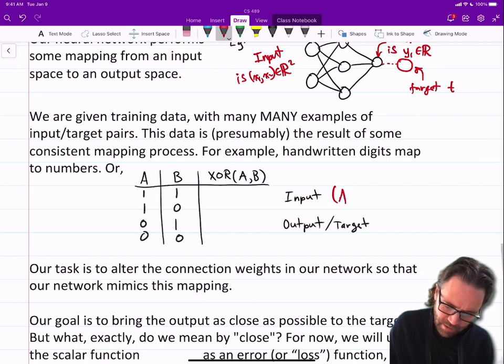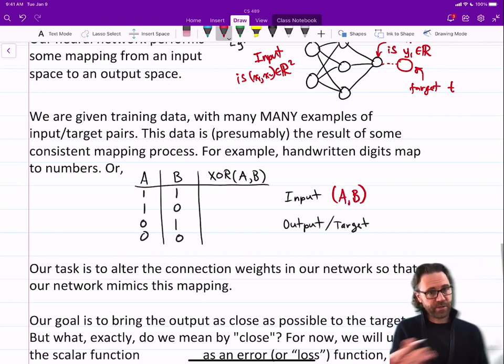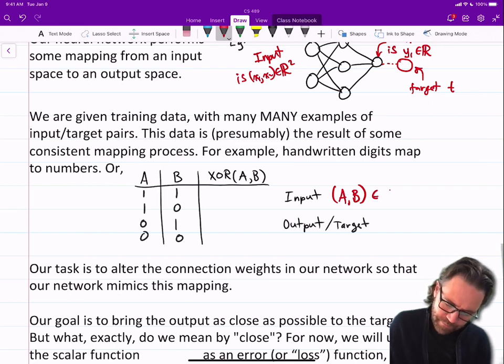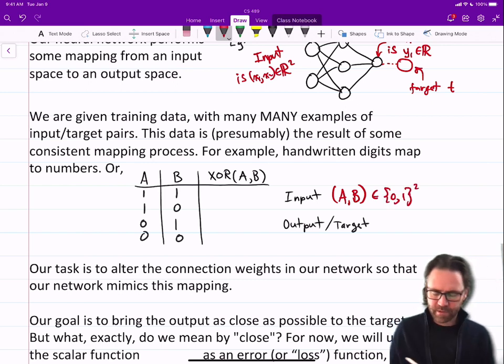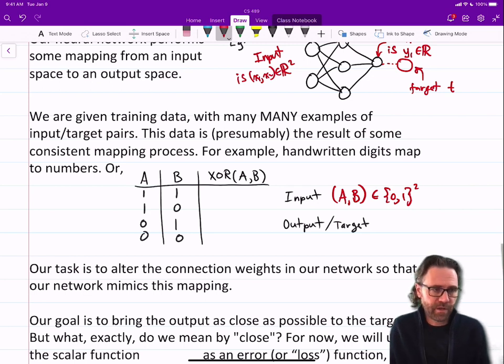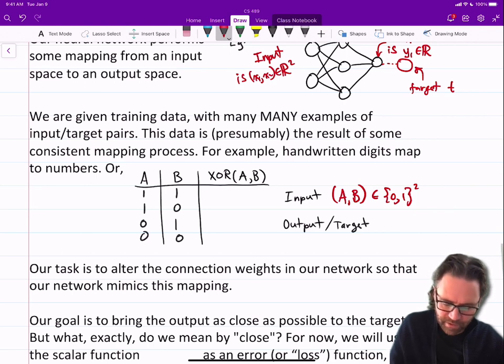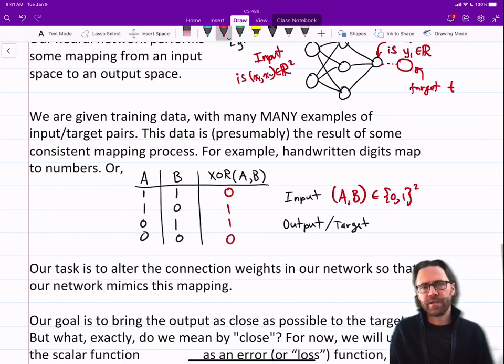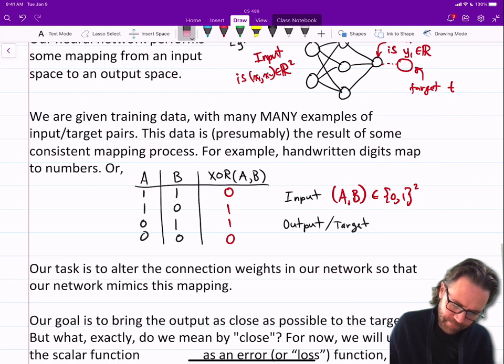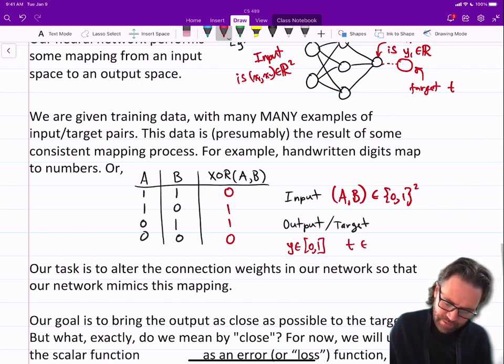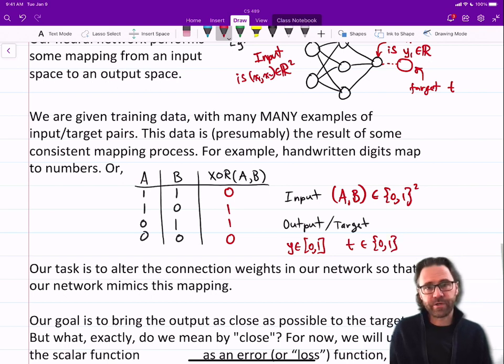So on the left, I have different inputs. So column A and B can be used as two different inputs to a dataset. So my inputs are strings of two bits. The output in this example is the XOR, the exclusive OR. If the inputs are the same, you have a zero as output. If they're different, you have a one as output. So the output is Y, it's an element of 0, 1. And the target is either 0 or 1.